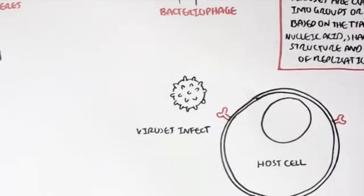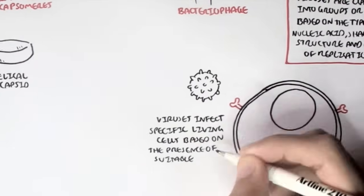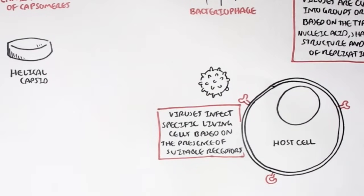Viruses also infect specific living cells based on the presence of suitable receptors. An example of this is HIV virus which only infects the T helper cells. Because the HIV virulence factors complement, it can attach to the T helper cell's so-called CD4 receptor.